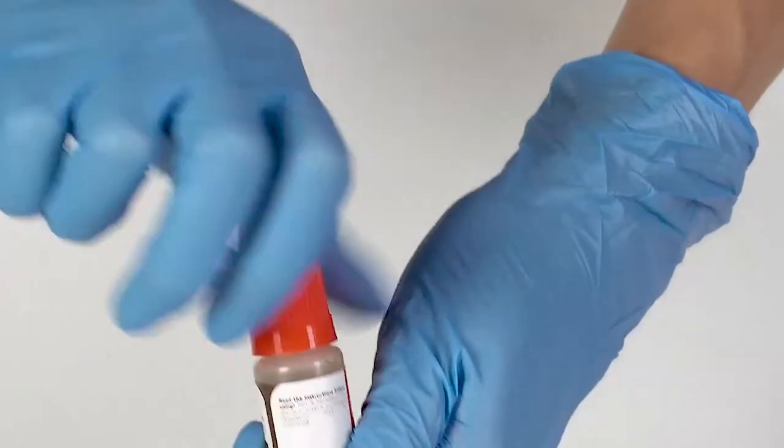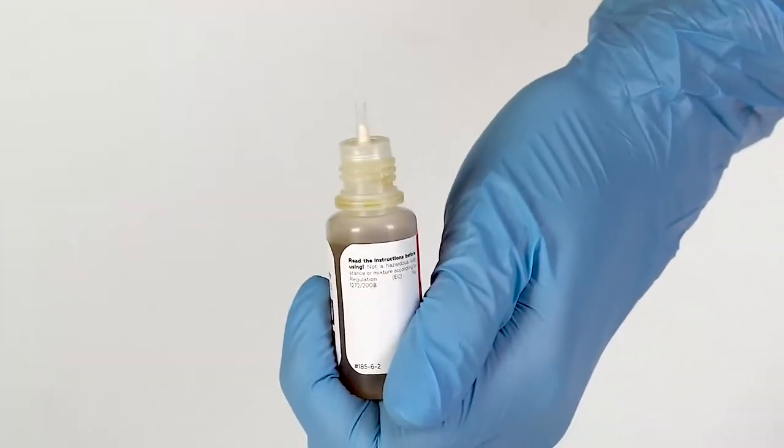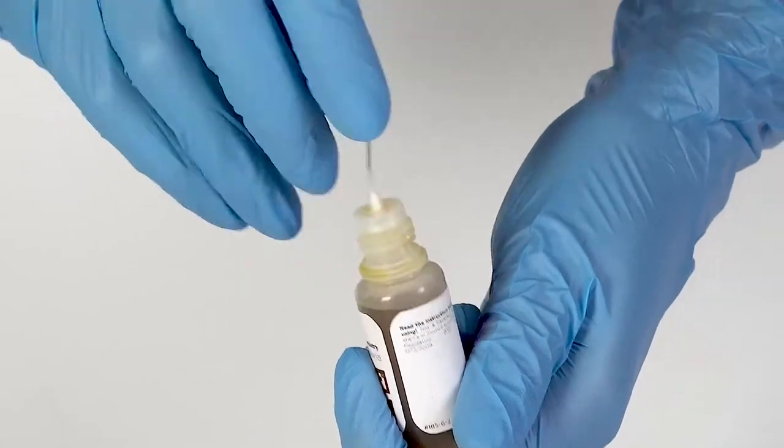To open a bottle containing a reagent, push the cap down and turn it. Pierce the bottle nozzle with an unbent paper clip.